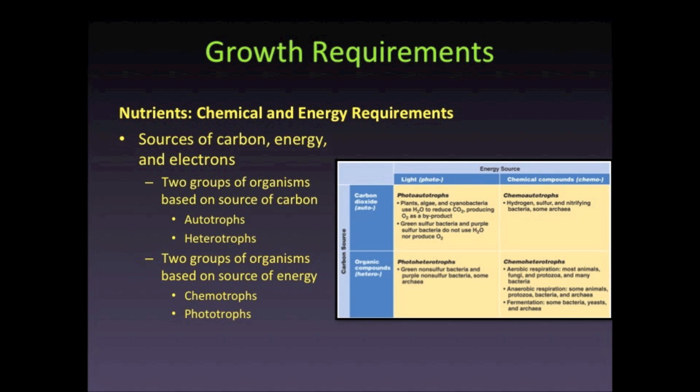Organisms can be classified based on their sources of carbon, energy, and electrons. Let's first examine classifications based on carbon sources. Organisms are classified into two groups: those that utilize inorganic carbon or carbon dioxide as their source are referred to as autotrophs. Autotrophs use carbon dioxide to synthesize their needed organic molecules — thus, we can say they feed themselves.